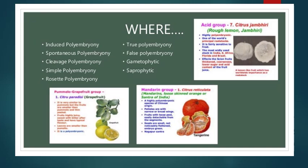The classification of polyembryony: polyembryony is divided into two types — induced polyembryony and spontaneous polyembryony — which are further categorized into different types. In cleavage polyembryony, a single fertilized egg gives rise to a number of embryos. In simple polyembryony, a number of embryos develop as a result of the fertilization of several archegonia. In rosette polyembryony, additional embryos develop from the rosette cells in certain genera such as Sperms.